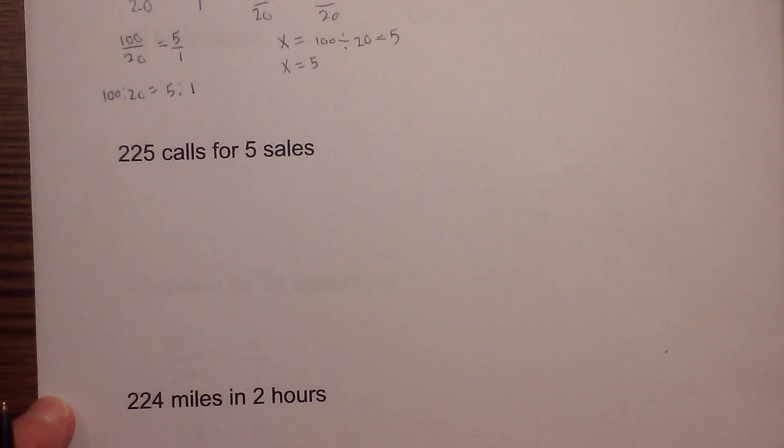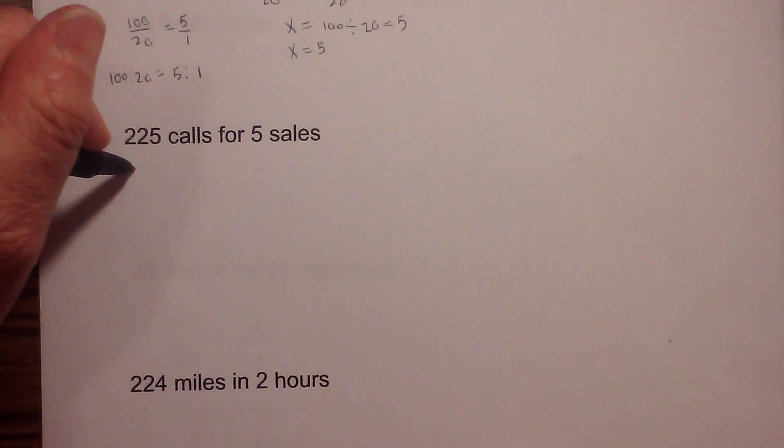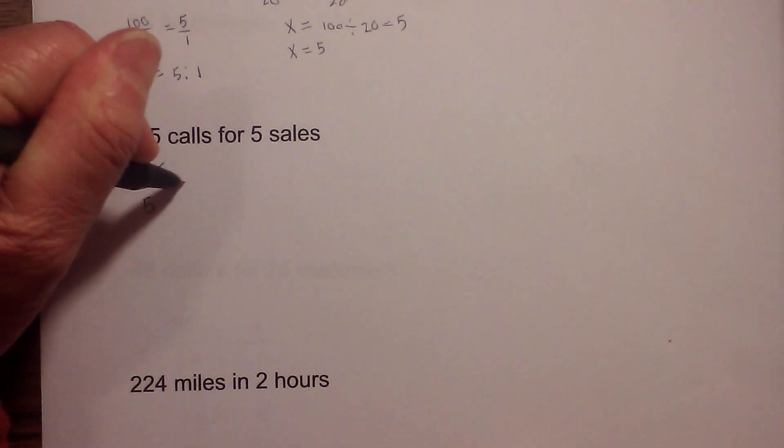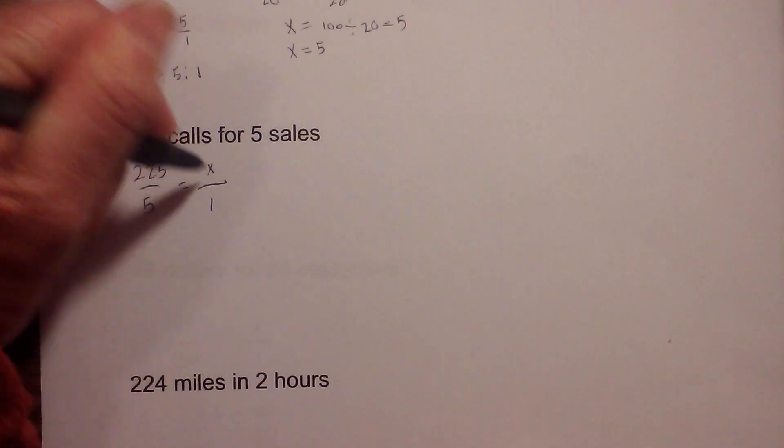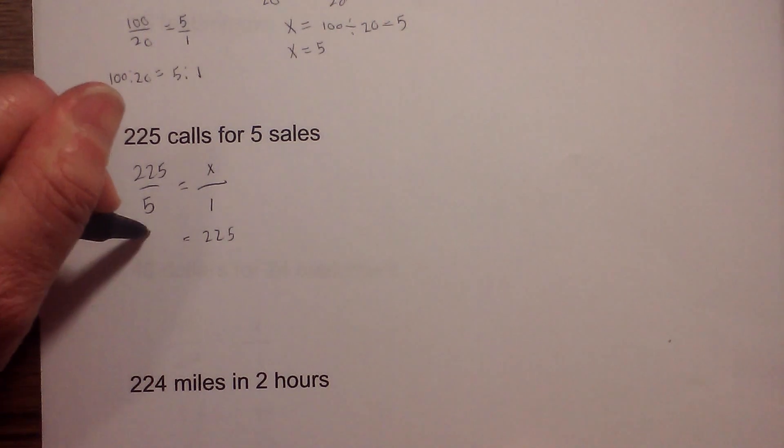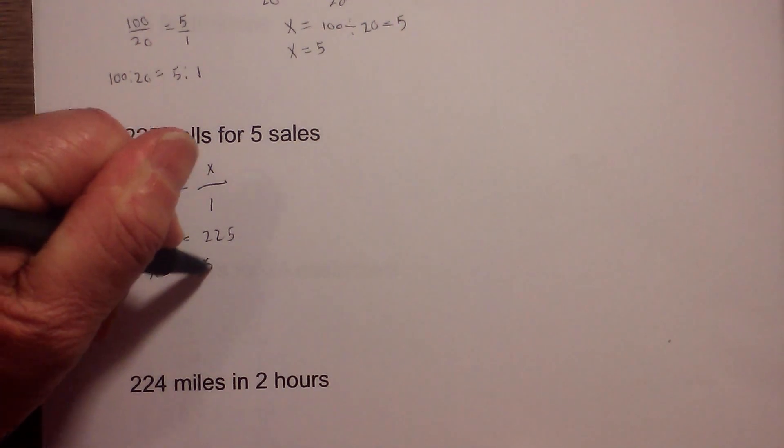Now let's look at the next one. For every 225 calls, I make 5 sales. I will write this in fraction form, 225 over 5, set this equal to 1 over x. Cross multiply: 225 is equal to 5x. X is equal to 45.